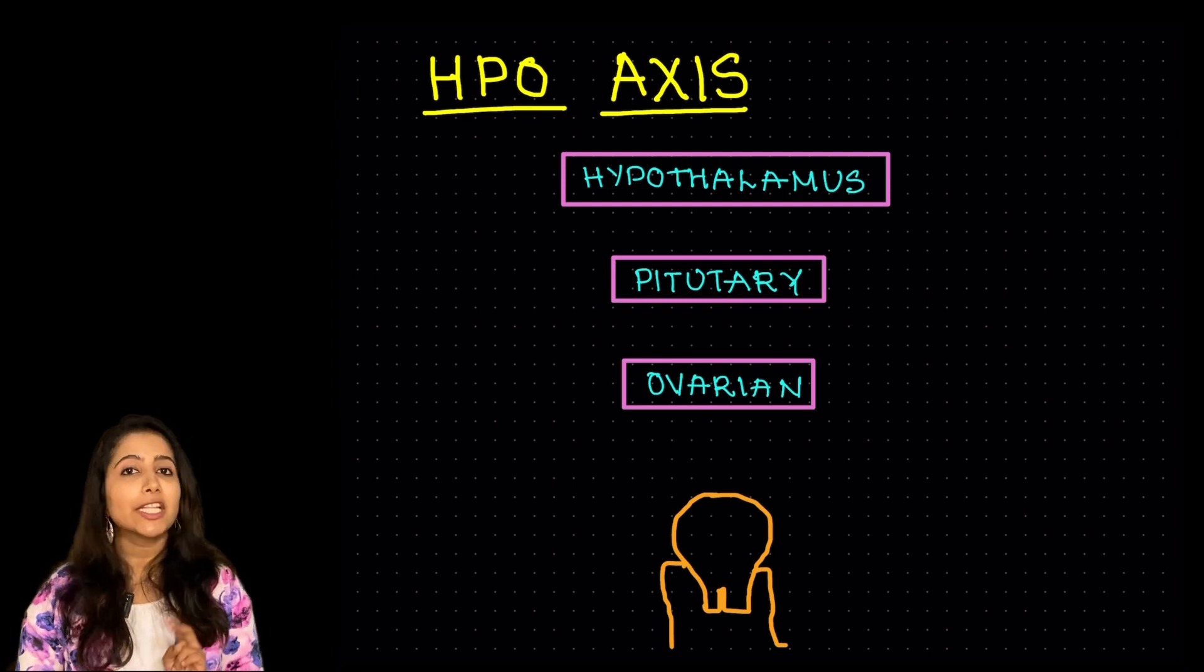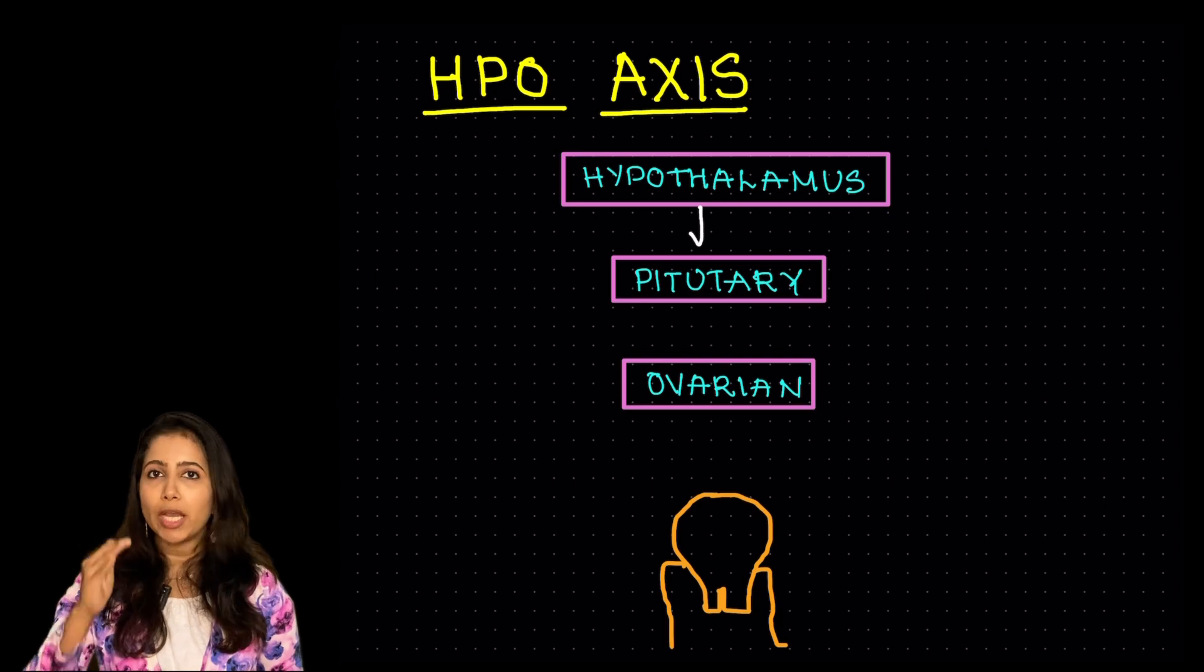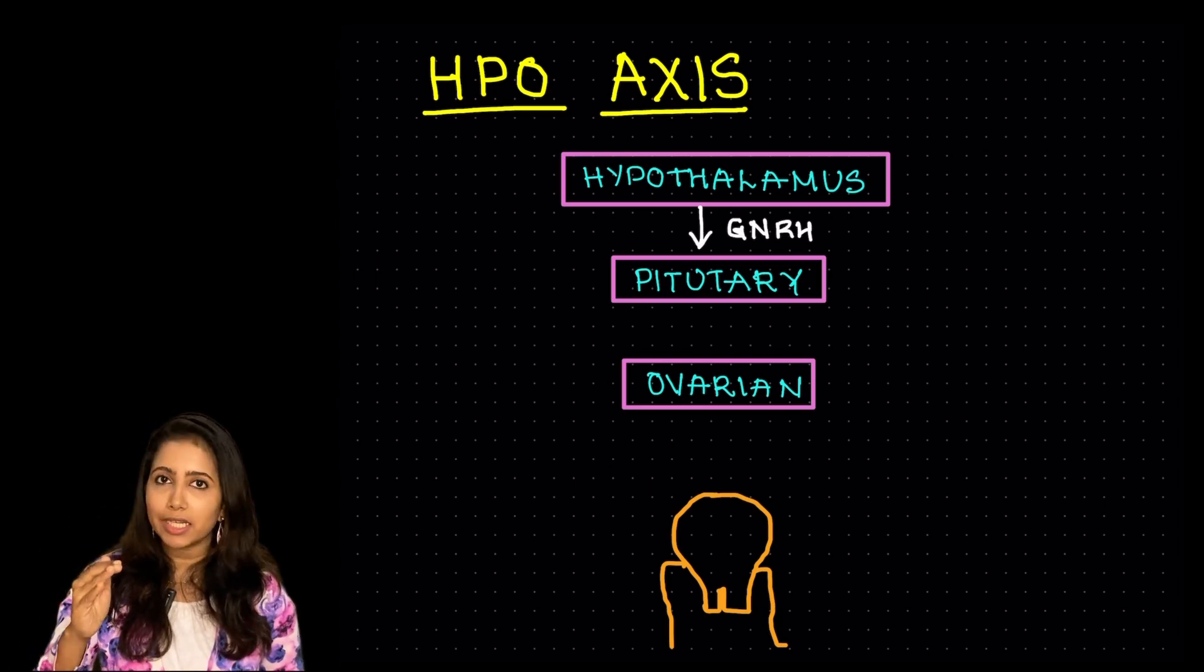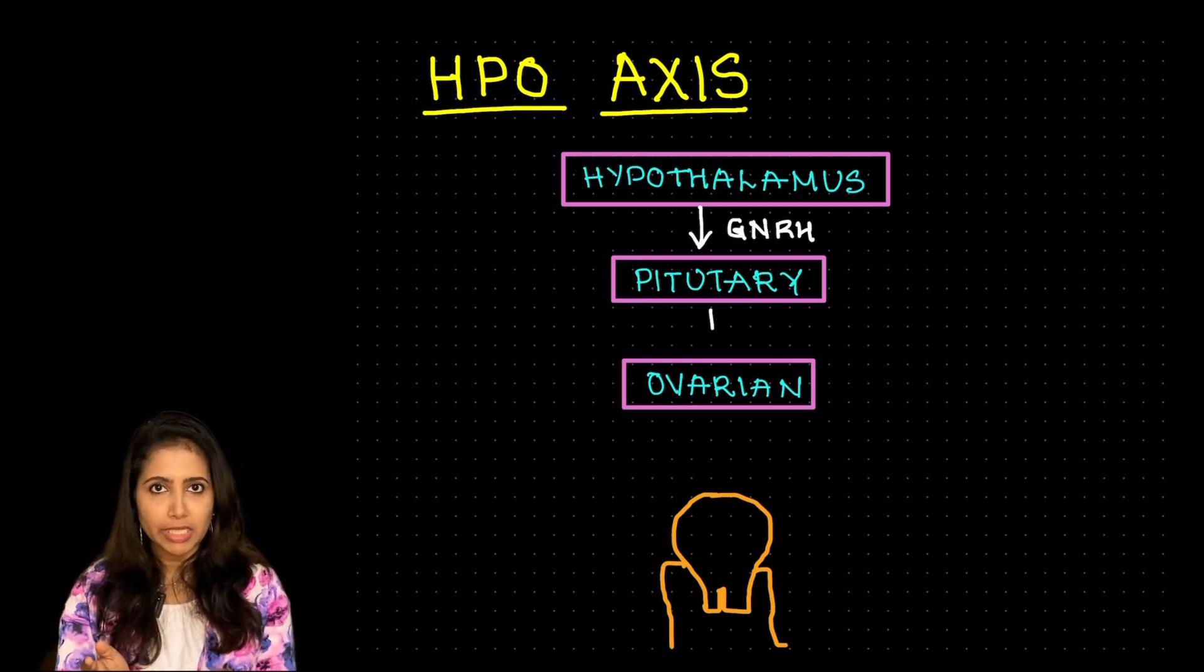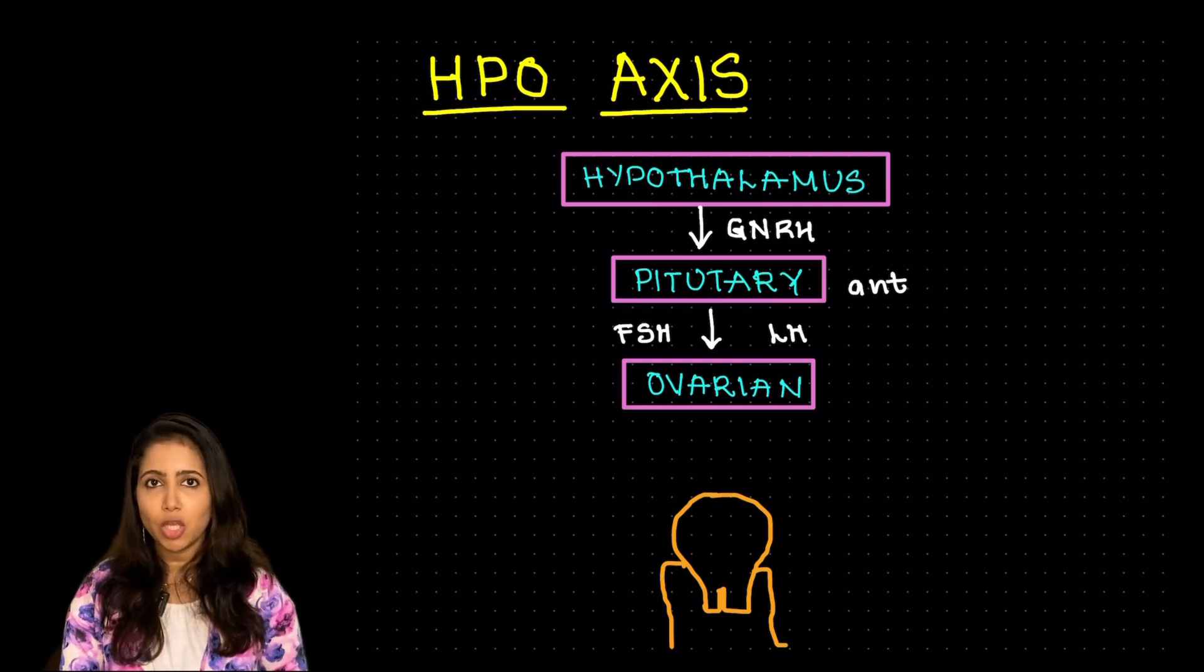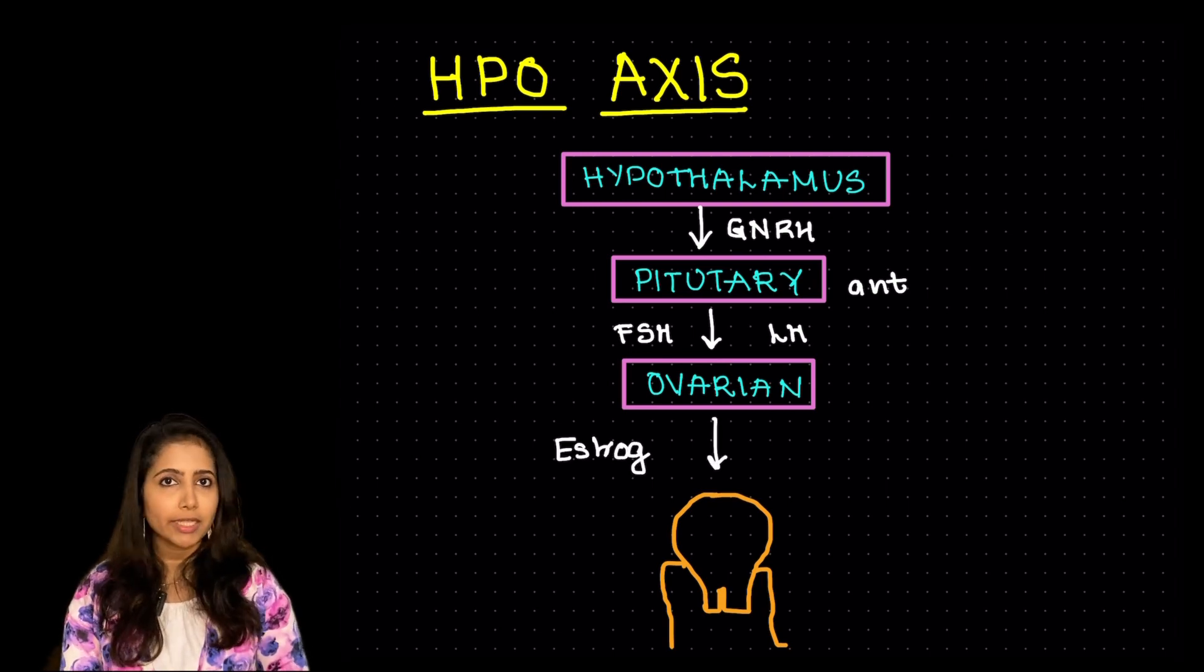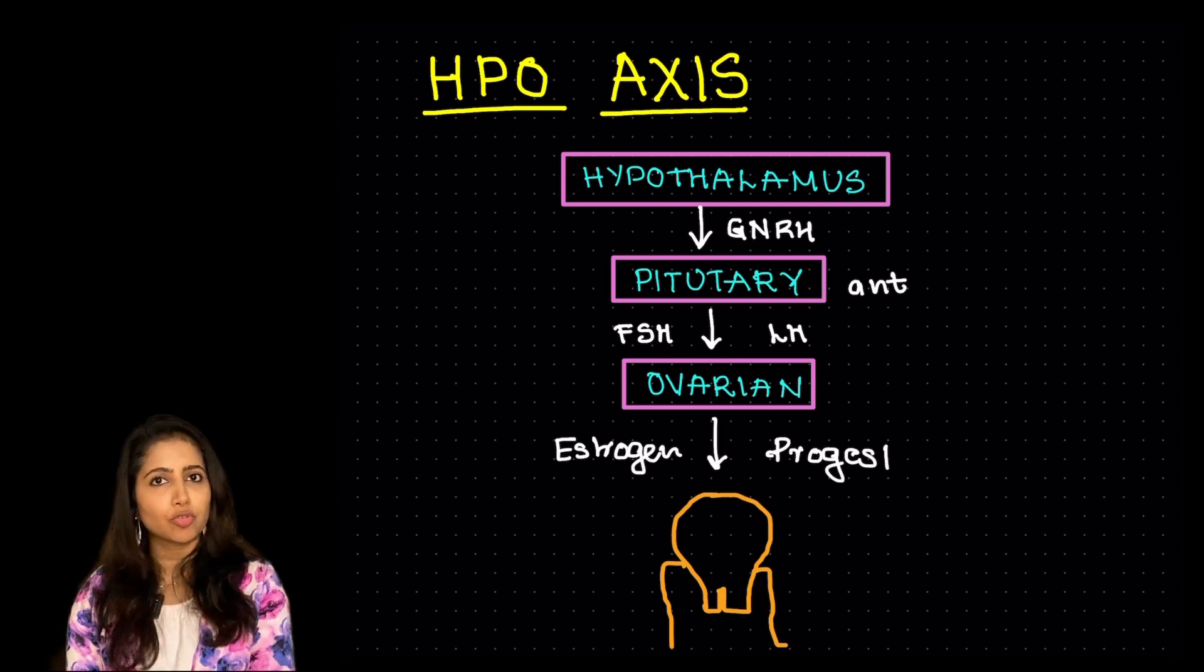The second is the HPO axis that is the hypothalamo-pituitary ovarian axis. So the hypothalamus will release GNRH which will act on the pituitary and the anterior pituitary will be releasing LH and FSH which will act on the ovaries and the ovaries are going to release estrogen and the corpus luteum will release the progesterone.